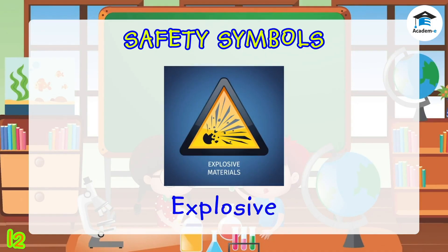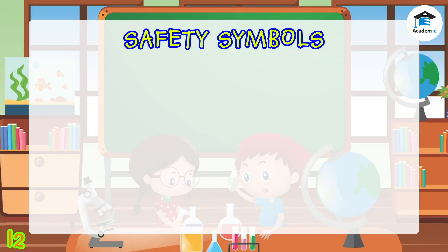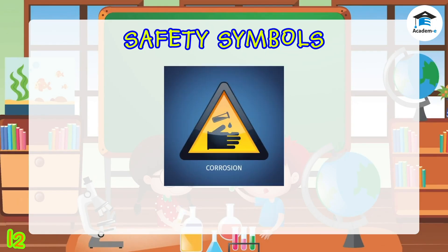Explosive: products with this symbol can easily blow up and release poisonous fumes into the air. Corrosive: products with this symbol contain acids that can destroy and damage other materials they come in contact with, including the skin.